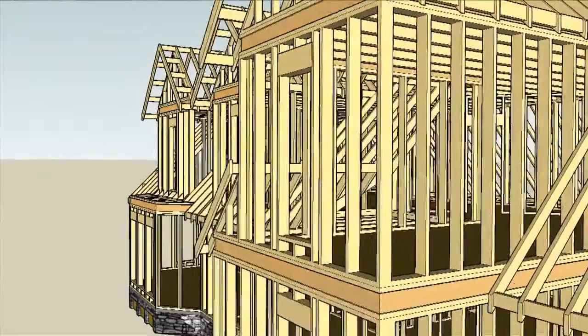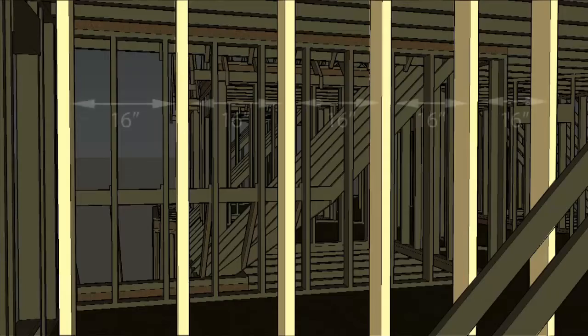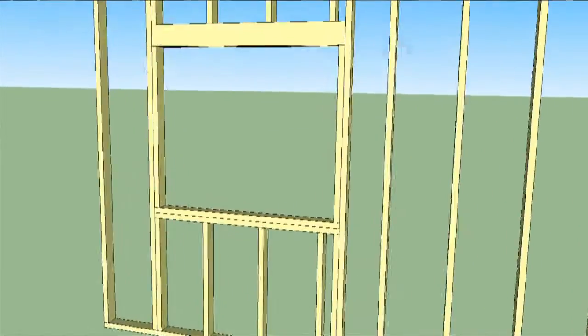Wall studs are support beams in your home's walls. They're typically 16 to 24 inches apart. Areas that need extra support have what are known as double or triple studs.